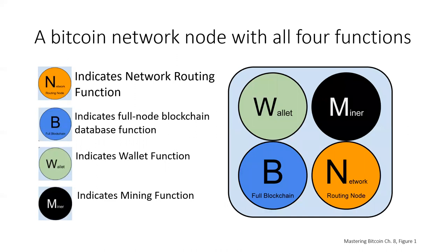Here's an example of a node that has all four capabilities: the network routing function marked in orange, the full blockchain database function in blue, a wallet in green, and a mining function in black. This might be the equivalent of Bitcoin Core with all of its capabilities deployed on a single node.